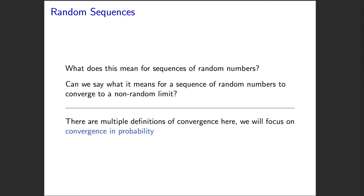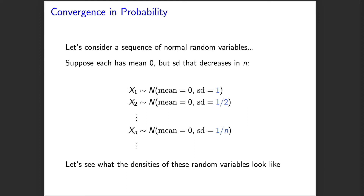We've reminded ourselves what it means for deterministic sequences to converge. So what about sequences of random numbers? What would it mean for a sequence of random numbers to converge to a non-random limit? There are several definitions we could use, and we're going to focus on convergence in probability — it will be the most useful for things we'll end up doing later. Consider a sequence of Gaussian random variables where each has mean zero but a standard deviation that decreases like one over n.